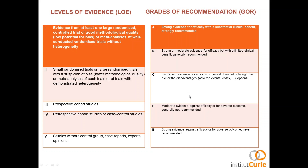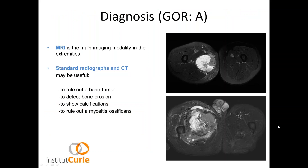The grades of recommendation go from A to E. Grade A: strong evidence for efficacy with substantial clinical benefit, strongly recommended. Grade B: strong or moderate evidence for efficacy but with limited clinical benefit — generally recommended. Grade C: insufficient evidence for efficacy or benefit does not outweigh risk. Grade D: moderate evidence against efficacy — generally not recommended. Grade E: not recommended.